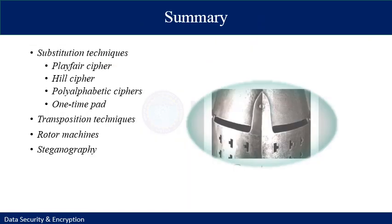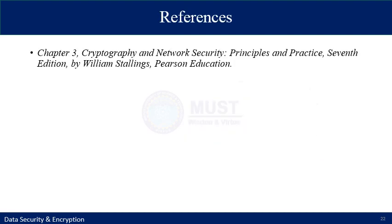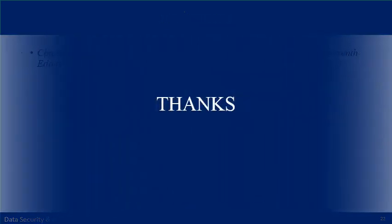This concludes the lecture. We discussed substitution techniques including Playfair cipher, Hill cipher, poly-alphabetic cipher, and one-time pad. We discussed transposition techniques such as rail fence cipher and row transposition cipher. We identified the working of rotor machines and discussed concepts of steganography. For further study, refer to chapter 3 of 'Cryptography and Network Security'. You can ask questions through any available medium.